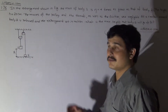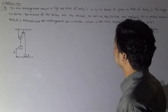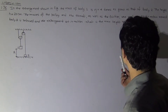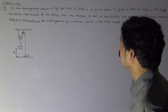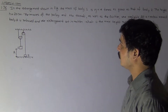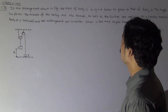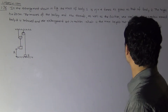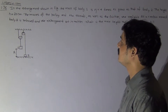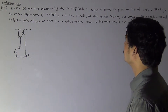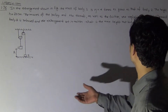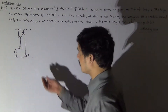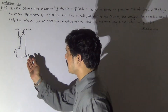Hello students, this is problem 1.76. In the arrangement shown in the figure, the mass of body 1 is eta times as great as body 2. The height h is 20 cm. The masses of the pulley and the thread as well as friction are negligible. At a certain moment, body 2 is released and the arrangement is set in motion. What is the maximum height that body 2 will go up to?